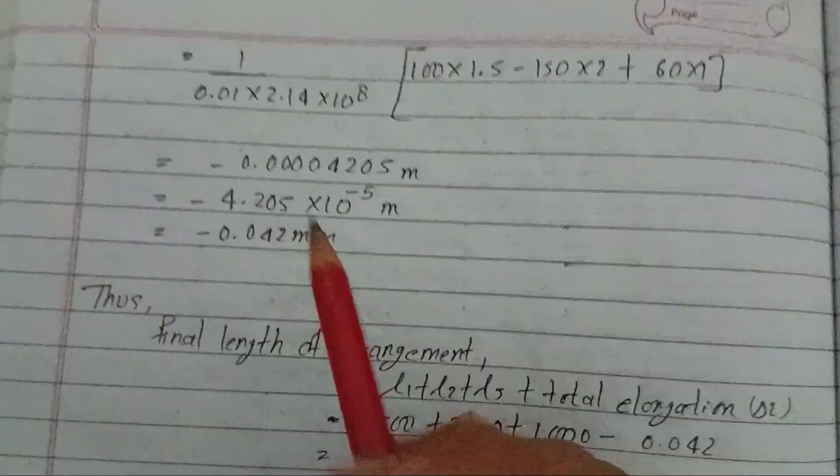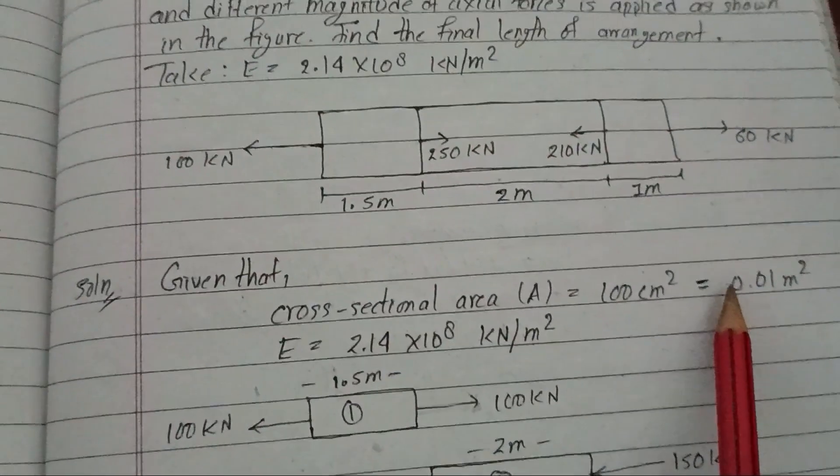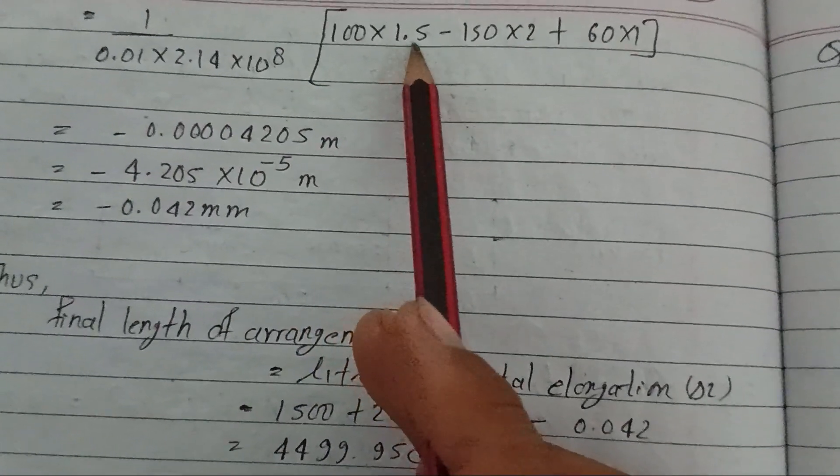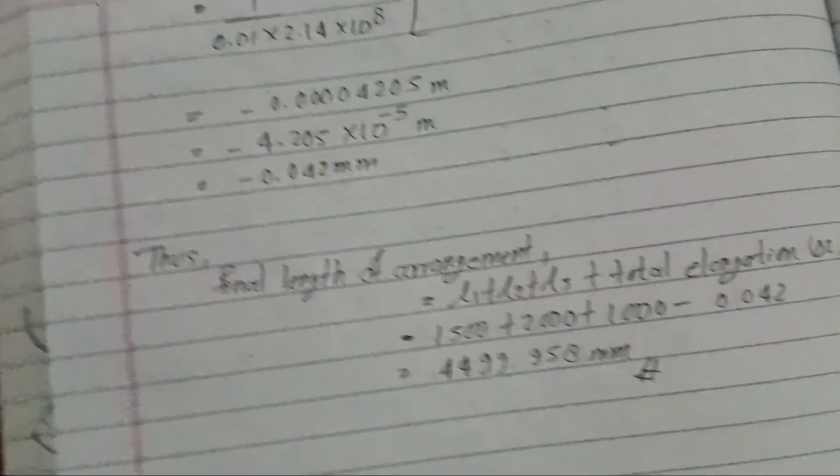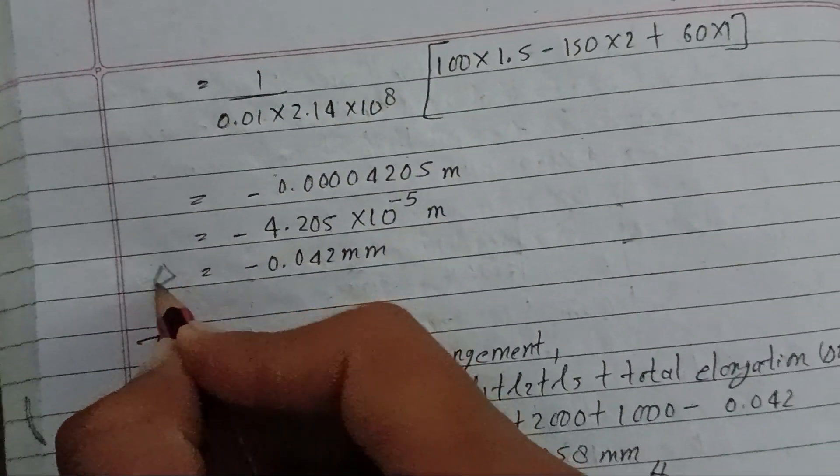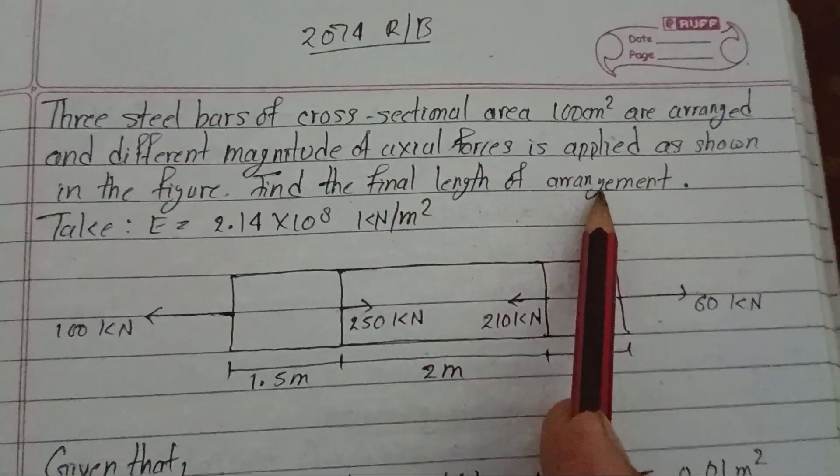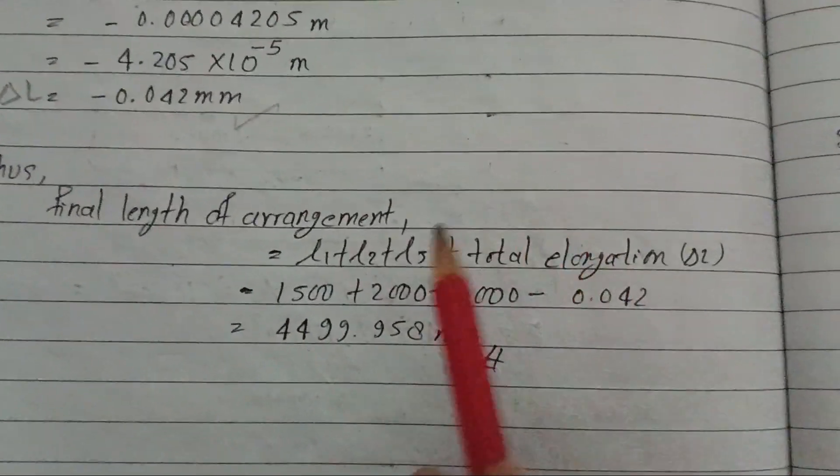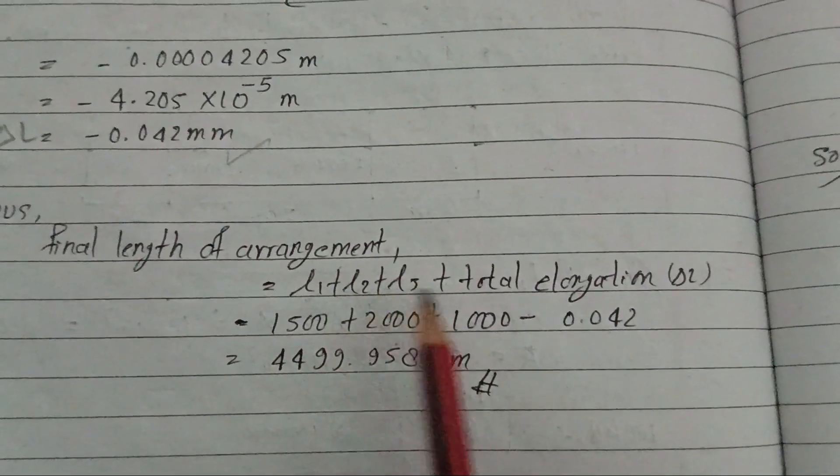Now let me put the values. A equals 0.01 meter square. E is given as 2.14 into 10 to the power 8. P1 is 100, L1 is 1.5. P2 is 150, L2 is 2. P3 is 60, L3 is 1. Solving this, the total elongation comes out to be minus 0.042 mm.